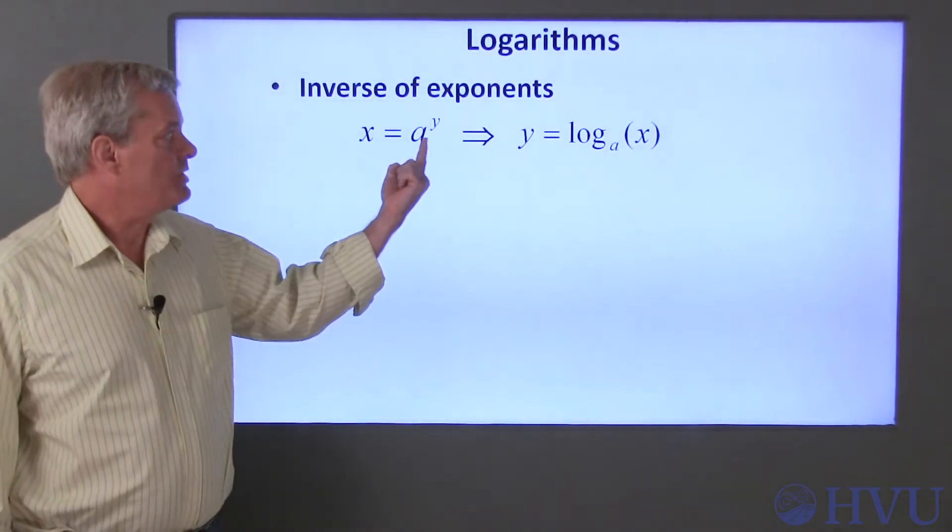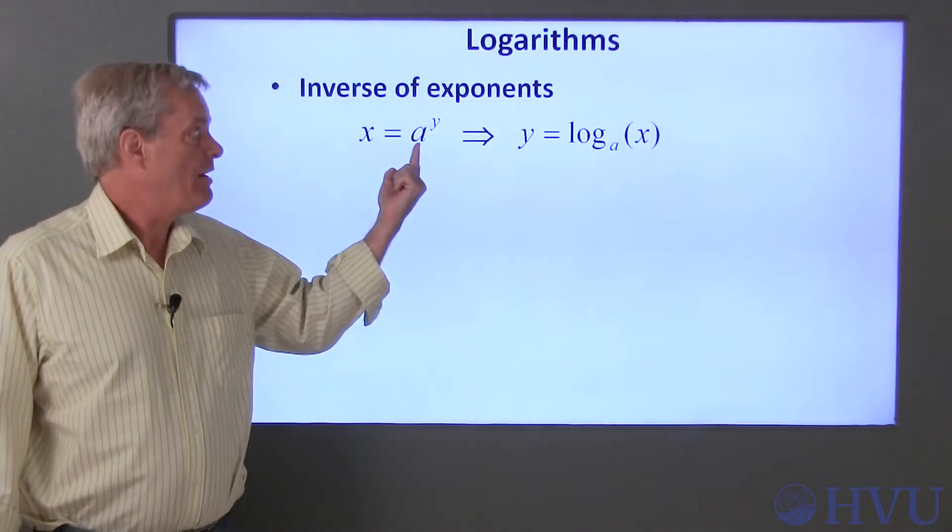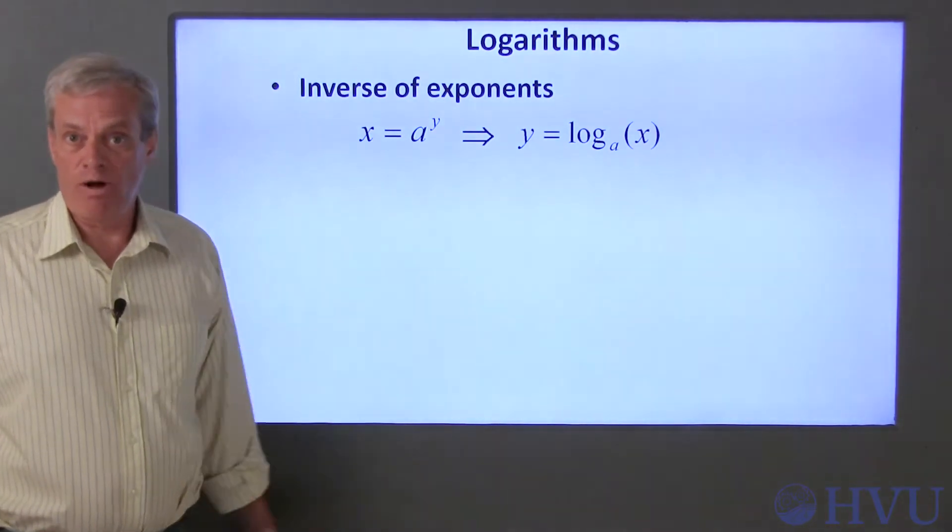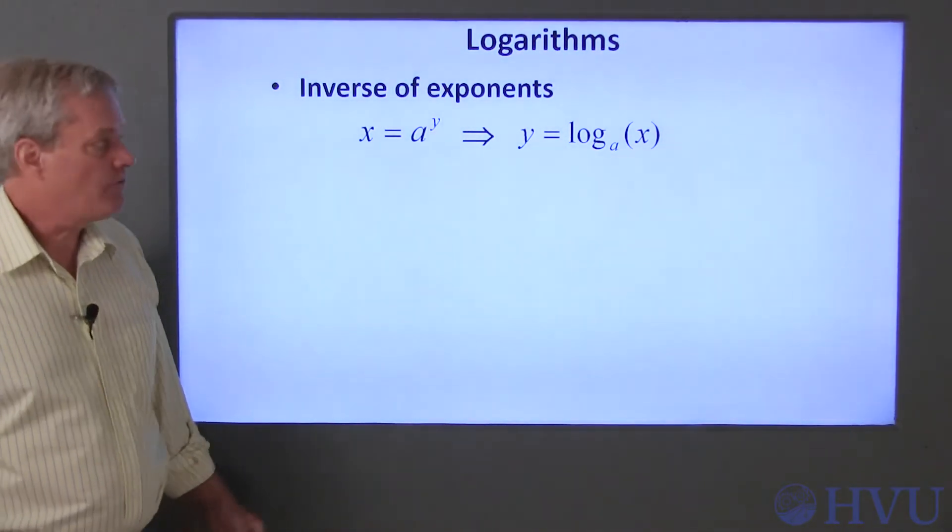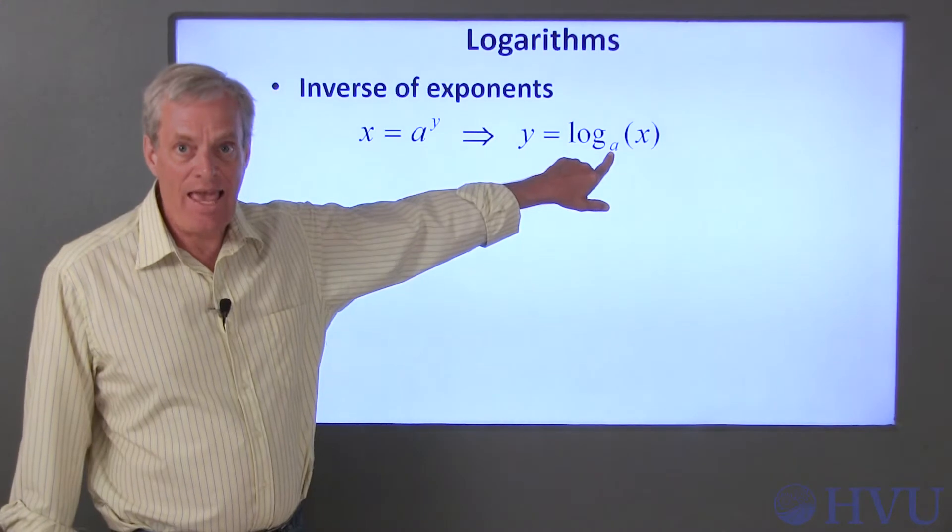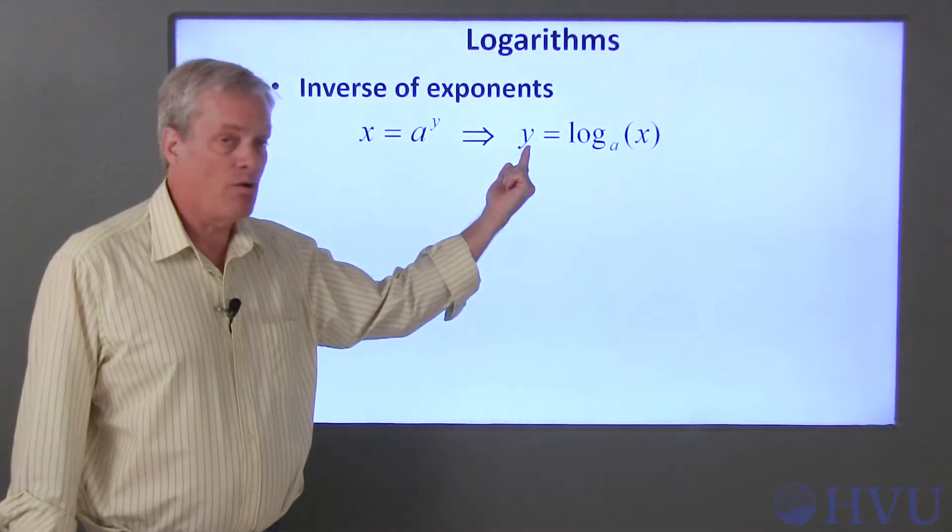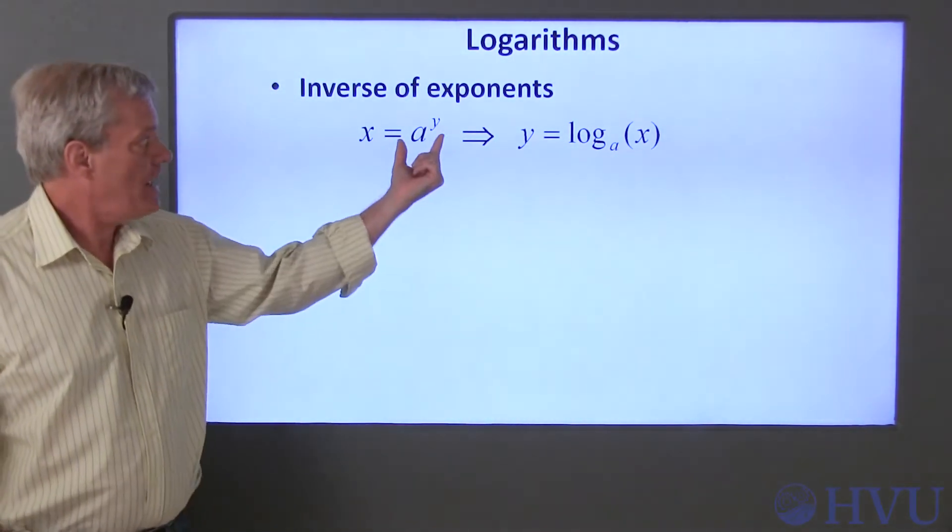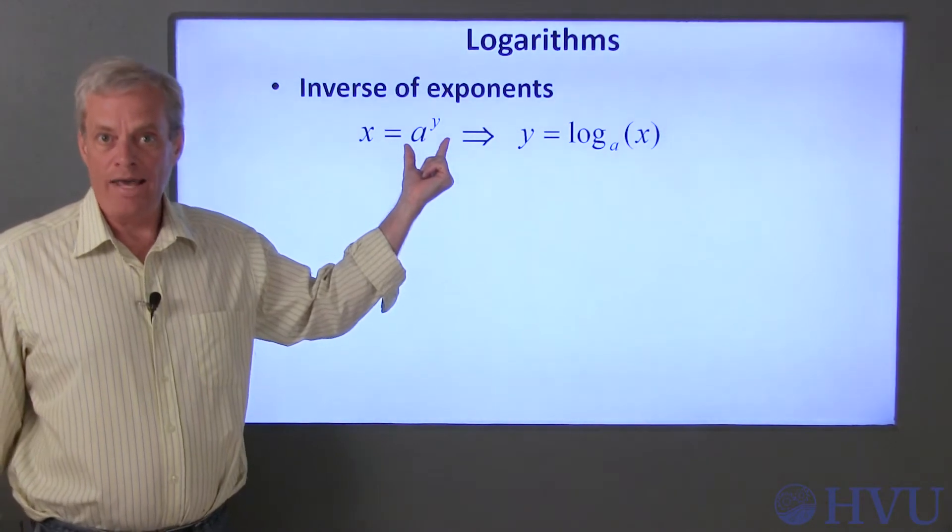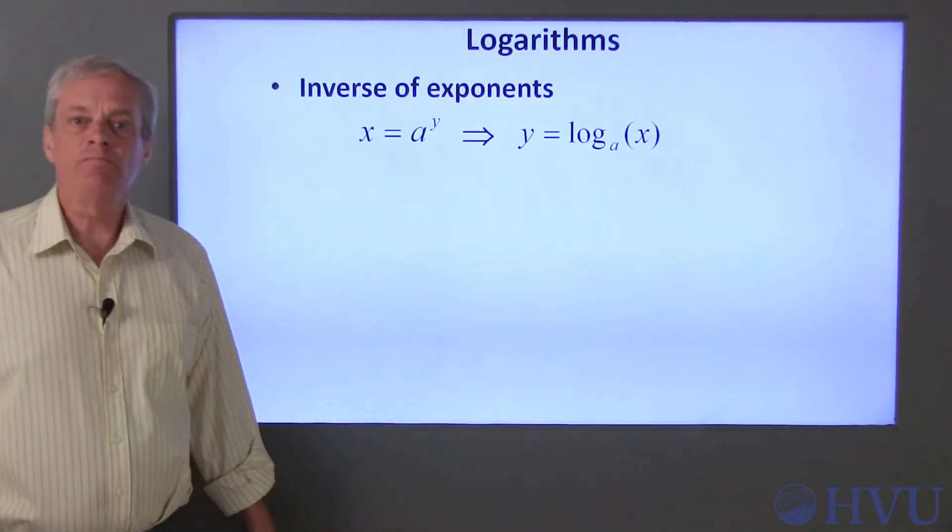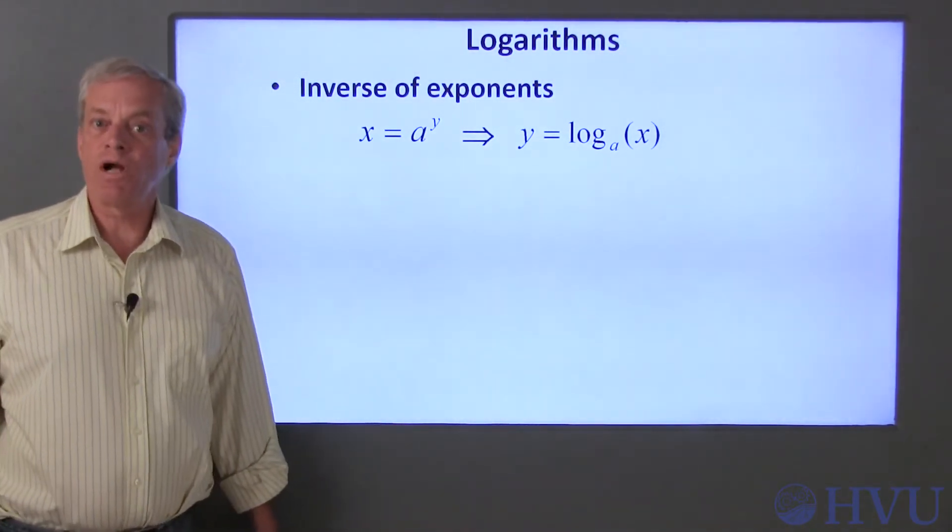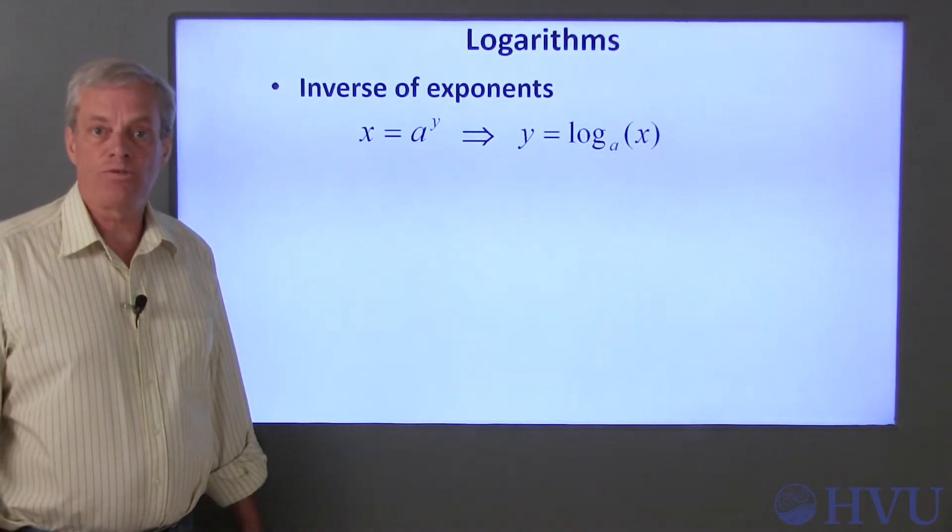Suppose we have a function x equals a to the y-th power, where a is a number and x and y are variables. If you take a logarithm that has base a of x, you get y back. So the base a logarithm of a to the y is y. This may not seem like much of an improvement, but there are some properties of logarithms that make this useful.